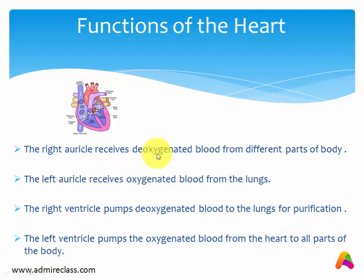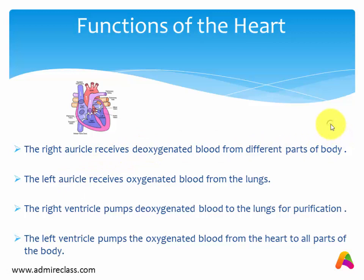What is the meaning of deoxygenated? Deoxygenated is that blood which is rich in carbon dioxide. And what is oxygenated? Oxygenated is that blood which is rich in oxygen. So these are the various functions of the heart.